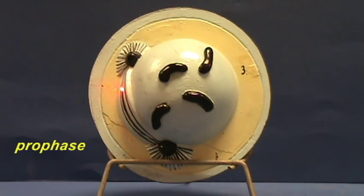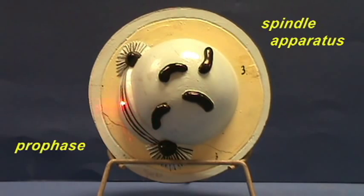These microtubules are going to form what is called a spindle apparatus, which is going to enable the cell to move these chromosomes around.